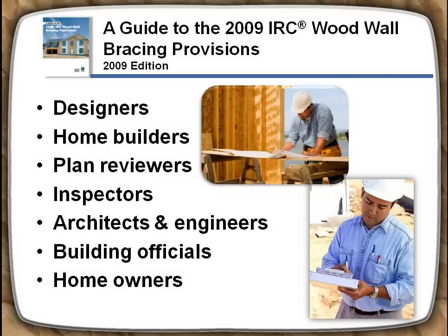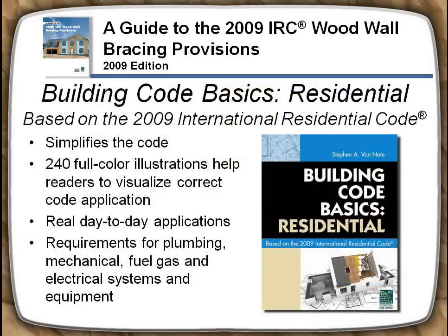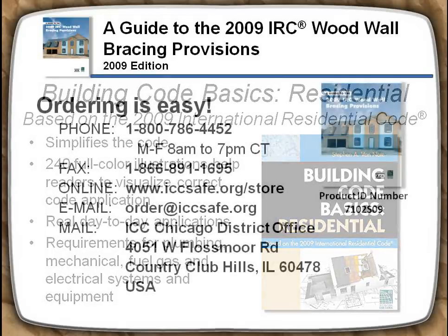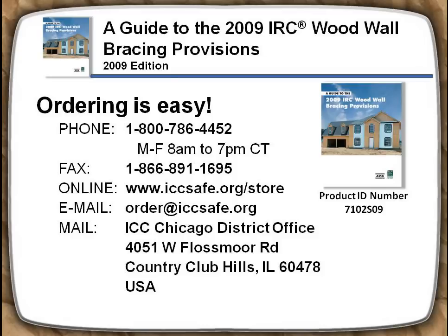Many groups will find this book a handy reference, including designers, home builders, plan reviewers, inspectors, architects and engineers, building officials, and homeowners. Another publication by ICC, Building Code Basics Residential, based on the 2009 IRC, presents code requirements with non-code language, detailed illustrations, and practical information to give readers a solid working knowledge of critical code applications. For more information, see the video for the Building Code Basics. The information needed to order the wood wall bracing provisions and other ICC publications is shown on the screen.